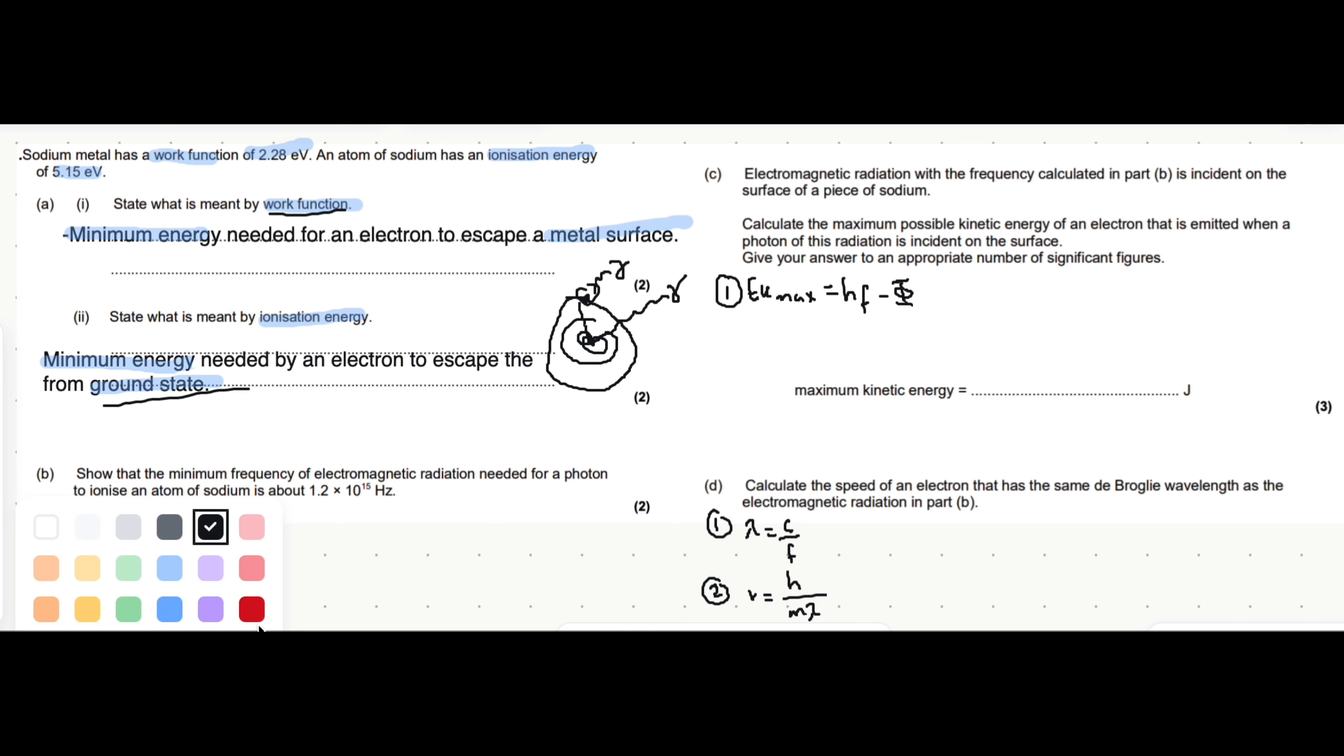Part b says show that the minimum frequency to ionize an atom is 1.2 times 10 to the 15 hertz. It's given us ionization energy 5.15 electron volts. We're going to use E equals hf. We rearrange this to get frequency equals energy over h. h is Planck's constant, given in an exam as 6.63 times 10 to the minus 34.